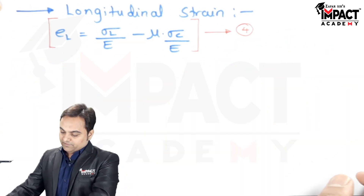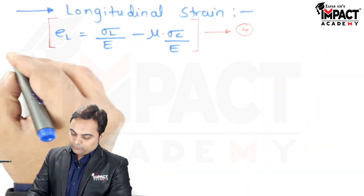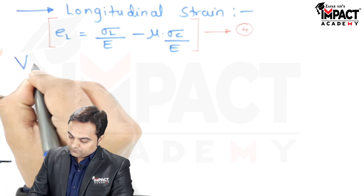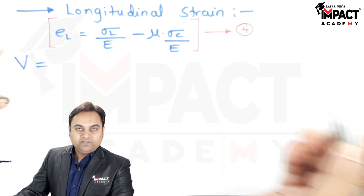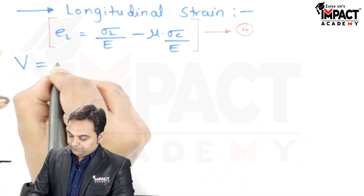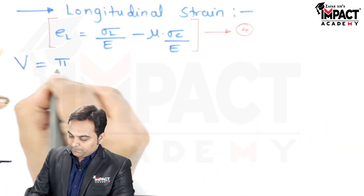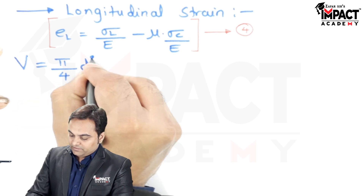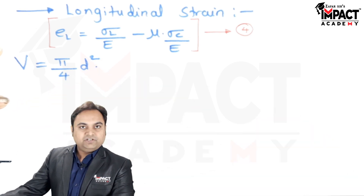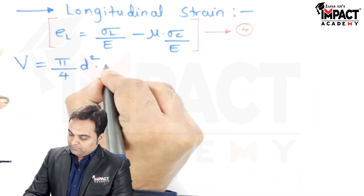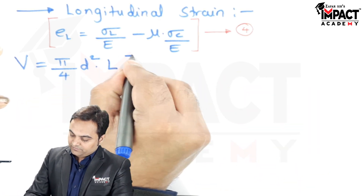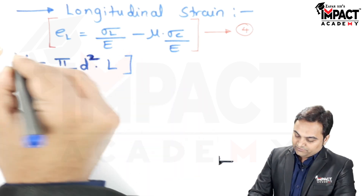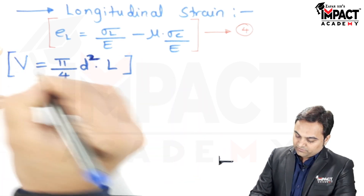The volume of the cylinder is given by V equals pi by 4 times d squared, that is the cross-sectional area, multiplied by the length L of the cylinder.